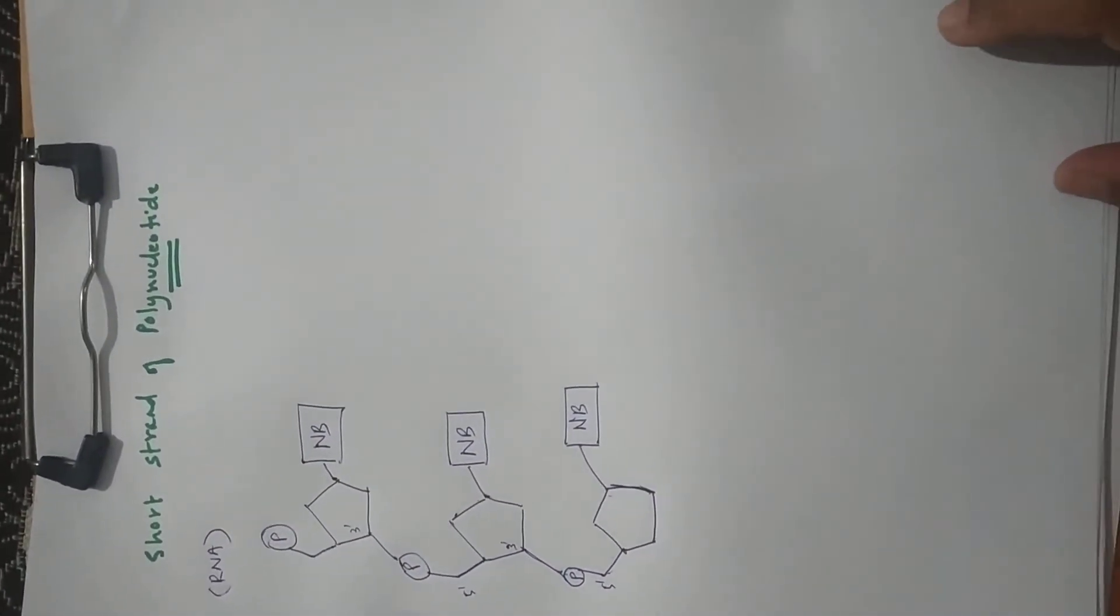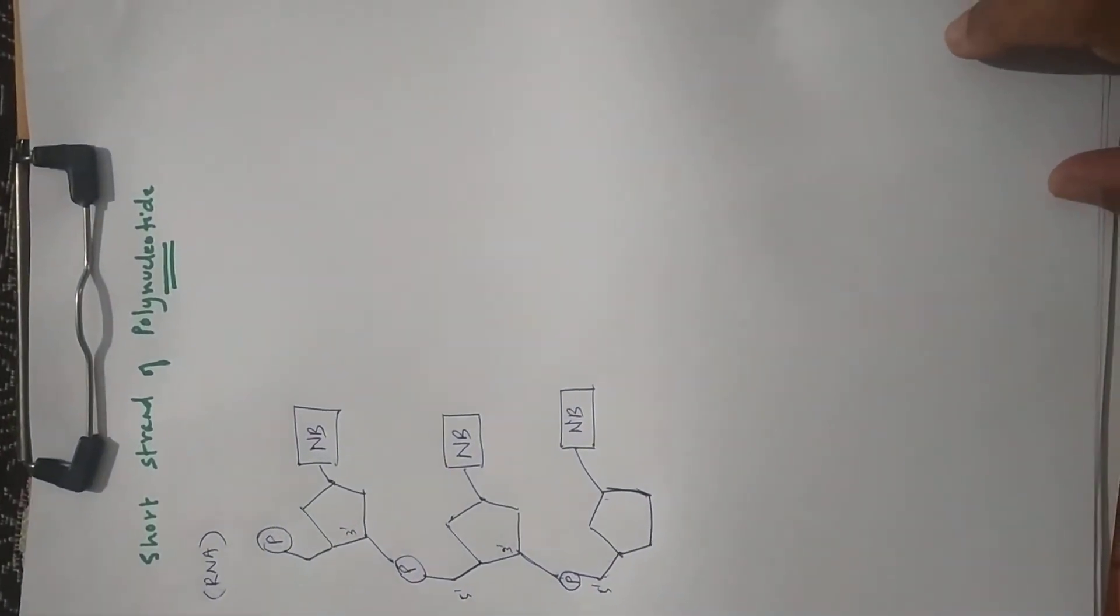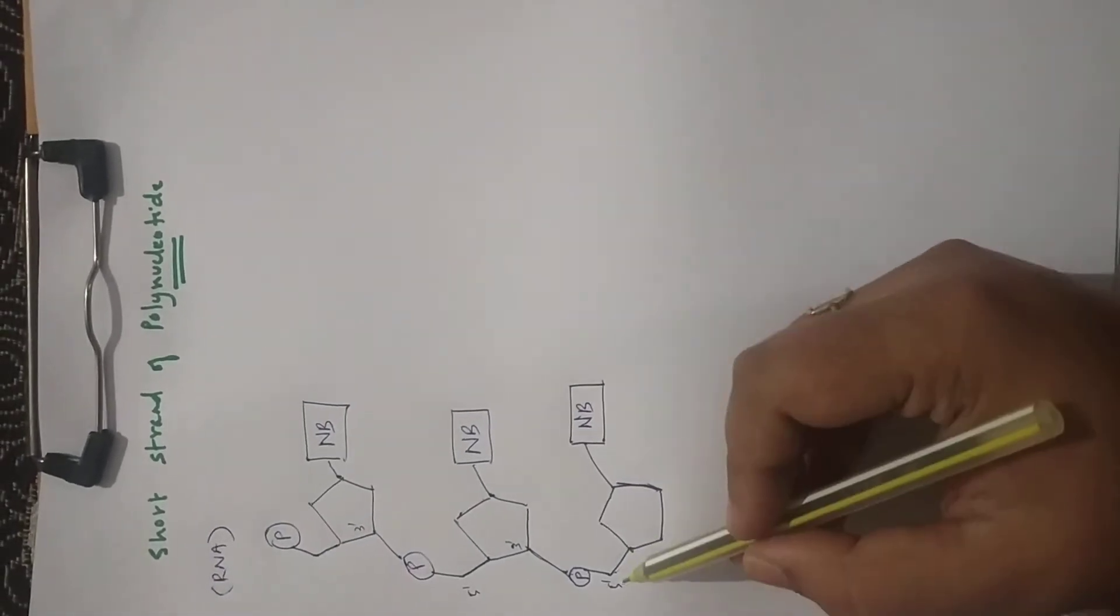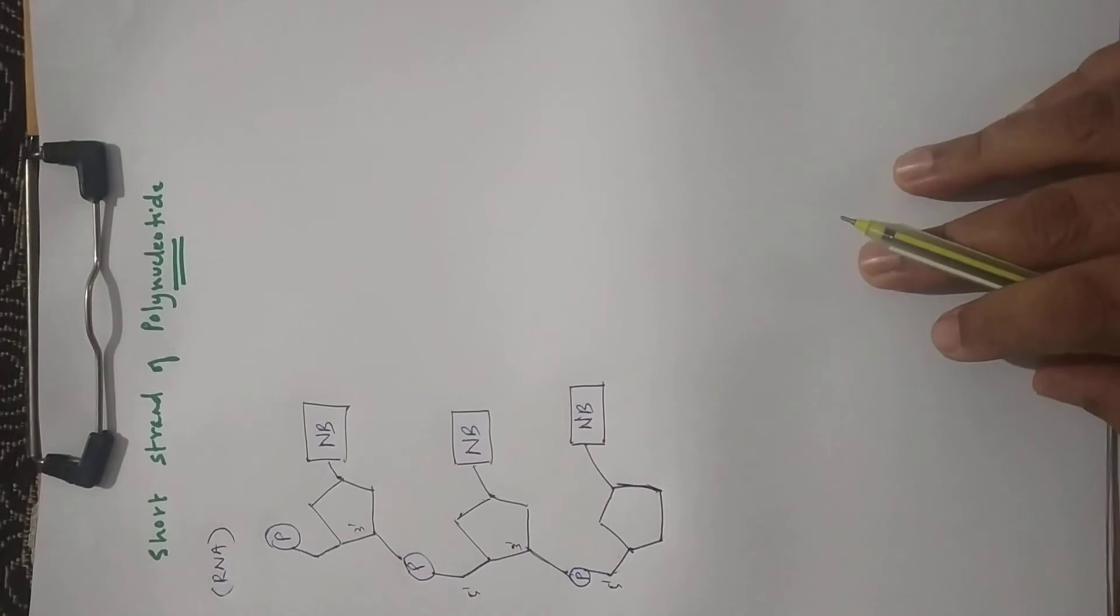So this is a short strand of RNA. You can see 3 nucleotides. And you can continue showing the 5' to 3' direction over here.